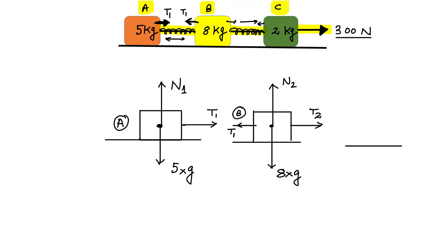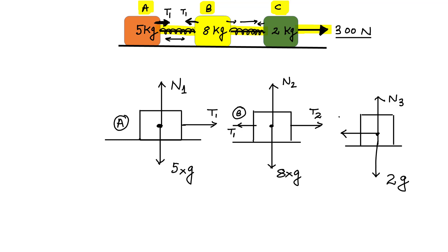Similarly, on block C we can draw the free body diagram. There is a normal reaction N3 acting upward, a weight of 2 times g acting downward, a string tension T2 pulling to the left, and the applied force of 300 Newton acting to the right.